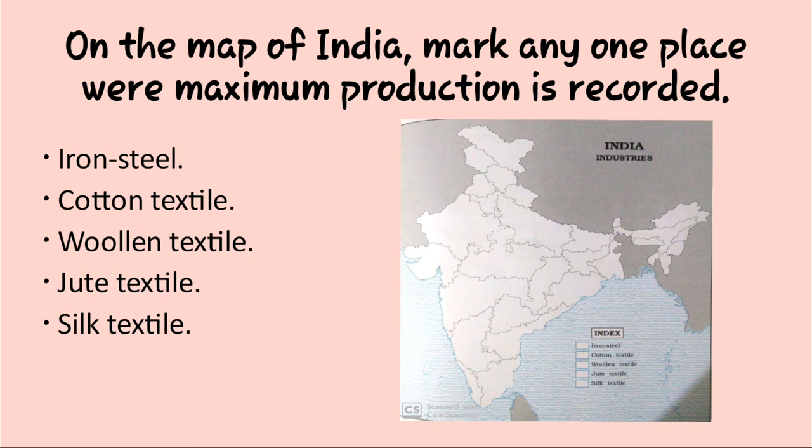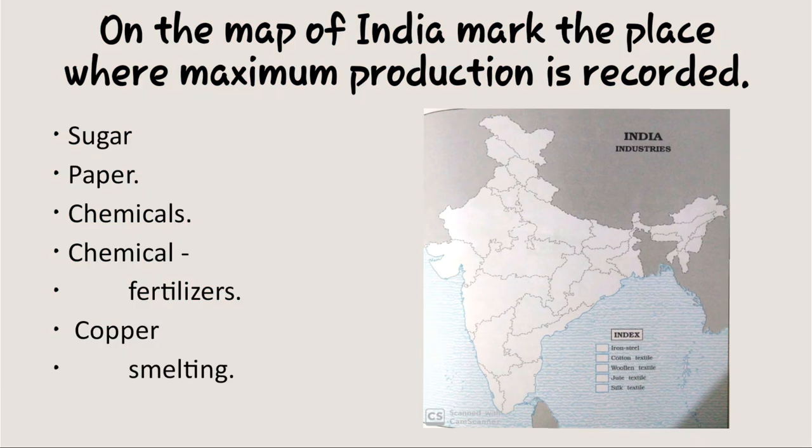With particular symbols you can mark these on the map. Next question on the map of India: mark the place where maximum production is recorded. For sugar manufacturing or sugar production, maximum sugar is produced at Kolhapur, Solapur, and Gujarat is also a maximum sugar producing state. Madhya Pradesh also has maximum sugar production.